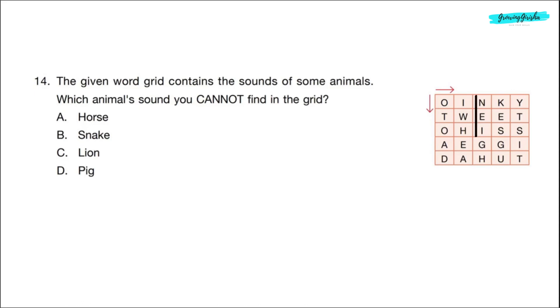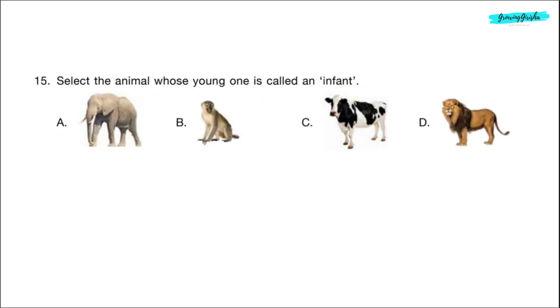Question 14. The given word grid contains the sounds of some animals. Which animals sound you cannot find in the grid? Option A, horse. Sound of horse is neigh. It is in the third column. Option B, snake. Sound of snake is hiss. It is in the third row after O. Option C, lion. Lion roars. Roar is not in the grid. So correct answer is option C. Question 15. Select the animal whose young one is called an infant. Correct answer is option B, monkey.